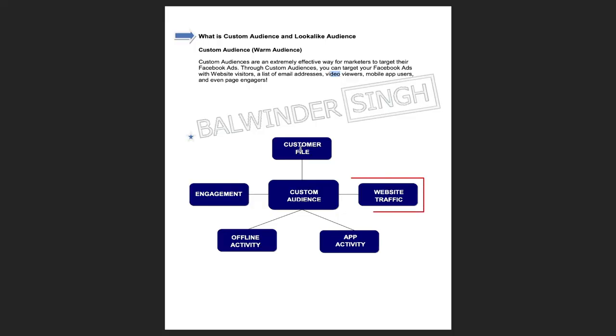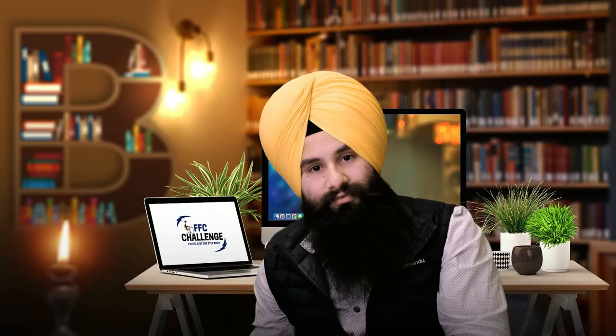Those people are interested, so you can easily target them again. For website traffic, the people who visited your website — you can re-target them by creating a segment called custom audience. For offline activity, people who come to your store — that's the store traffic campaign. For app activity, people who already installed your app: you can show them lots of things, like introducing a new product. You already have the data and can create a segment called custom audience and target them through Facebook ads.